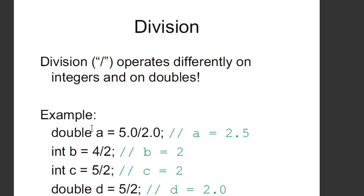I've declared a double here, and see this little decimal — 5.0 divided by 2.0? When I do that, I get 2.5. But you've got to be careful, because see this example below that — you get the same behavior in Python, by the way. I'm dividing 5 divided by 2, and I don't get 2.5. I get 2.0.